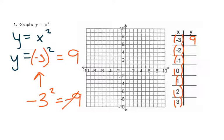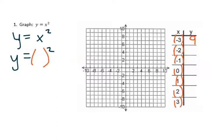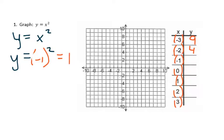So be very careful with negatives. The next one to plug in would be negative 2 — negative 2 squared gives us positive 4. After that, plug in negative 1, and negative 1 squared is 1. Then plug in a 0, and 0 squared is 0.